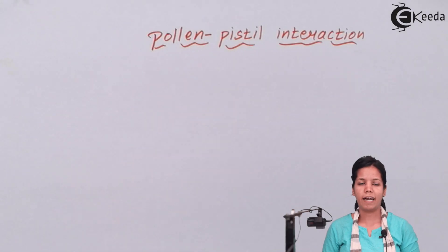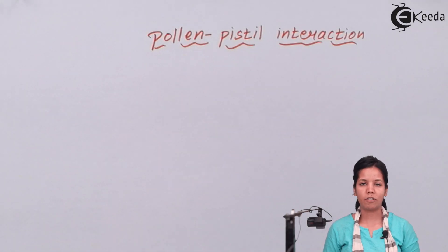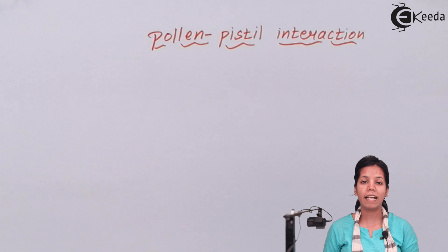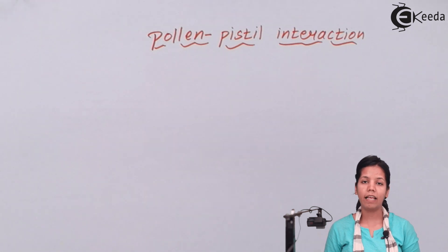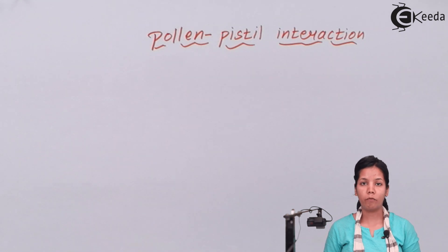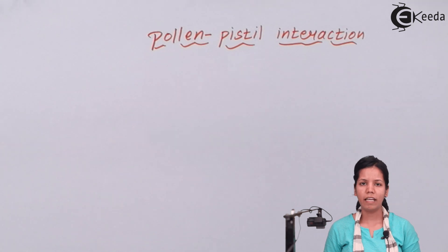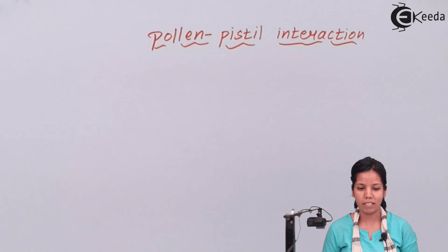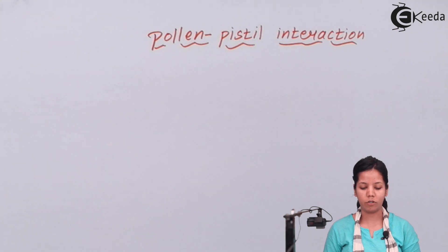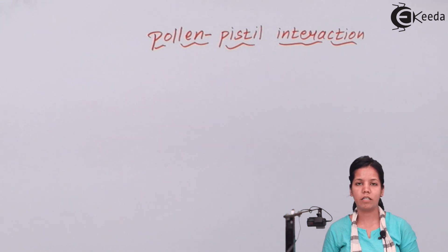What is pollen-pistil interaction? During the process of fertilization, the pollen grain which is present inside the anther goes inside the stigma, style and ovary. During this process of passing of pollen grains through the stigma, style and ovary, there is a certain interaction that takes place, and this interaction is pollen-pistil interaction.